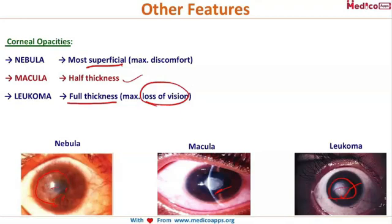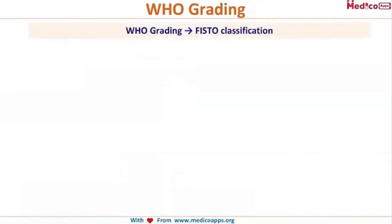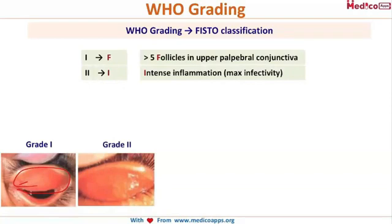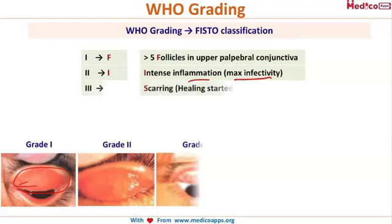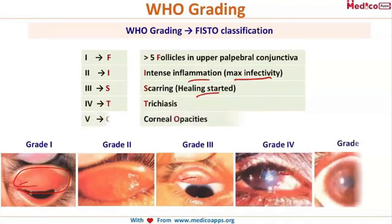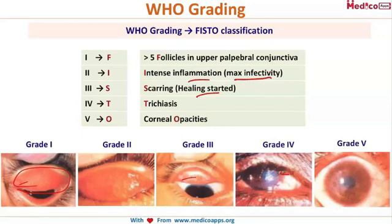For grading of trachoma, WHO uses the FISTO classification: F — greater than 5 follicles in the upper palpebral conjunctiva; I — intense inflammation, indicating maximum infectivity; S — scarring, indicating healing has started; T — trichiasis; O — corneal opacities. Grades 1 to 5 correspond to follicles, inflammation, scarring, trichiasis, and opacity.